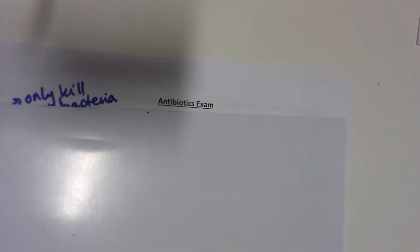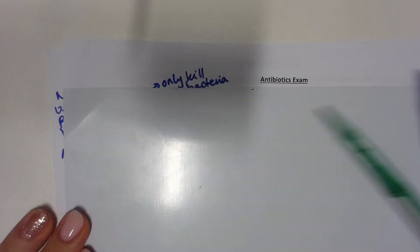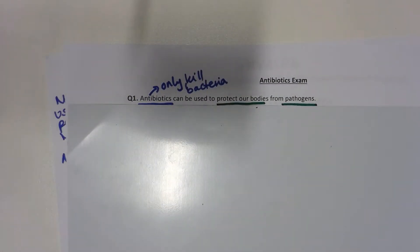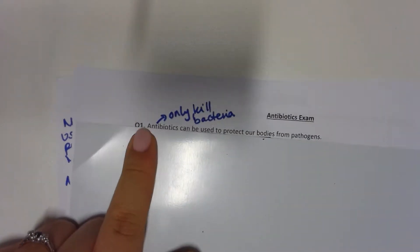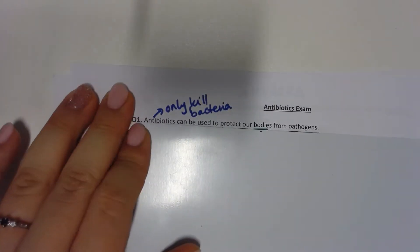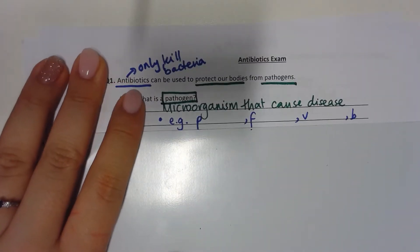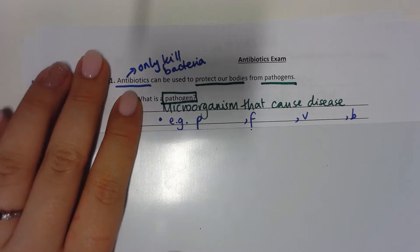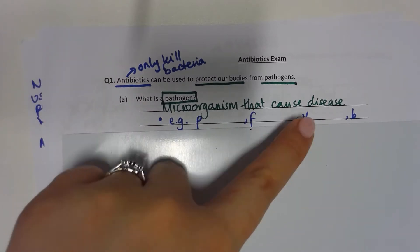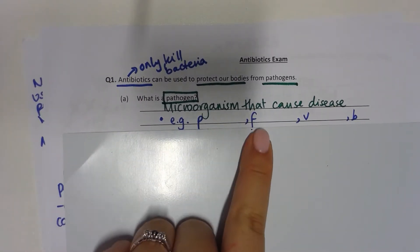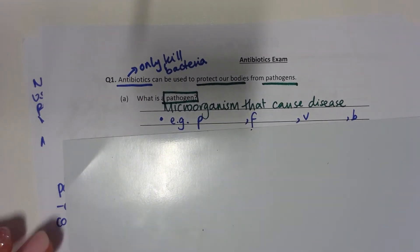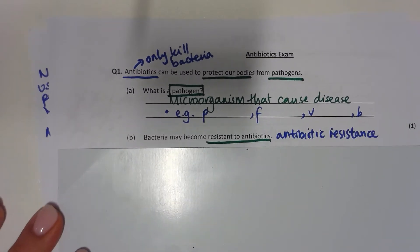Hello, welcome to this antibiotic exam — make sure you have your green and blue pens ready during this marking video. First question: antibiotics are used to protect our bodies from pathogens. Remember, antibiotics can only kill bacteria. What is a pathogen? They are microorganisms that cause disease. Make sure you fill in the blanks with examples: protists, fungi, viruses, and bacteria.